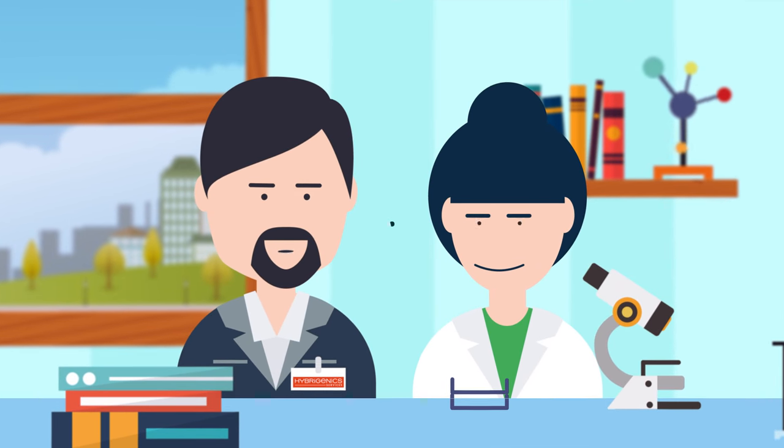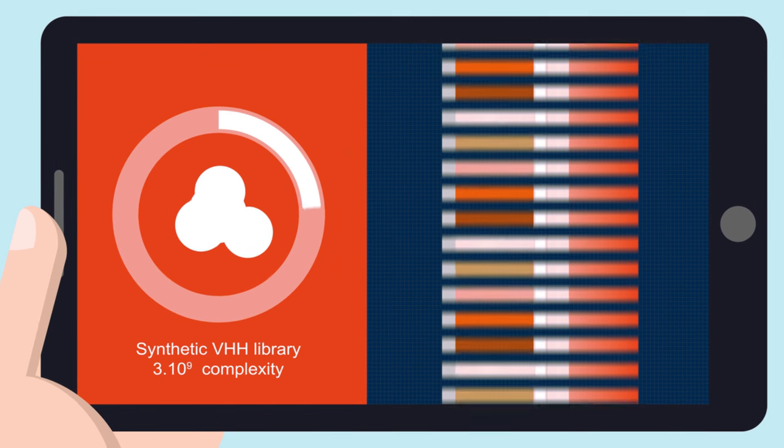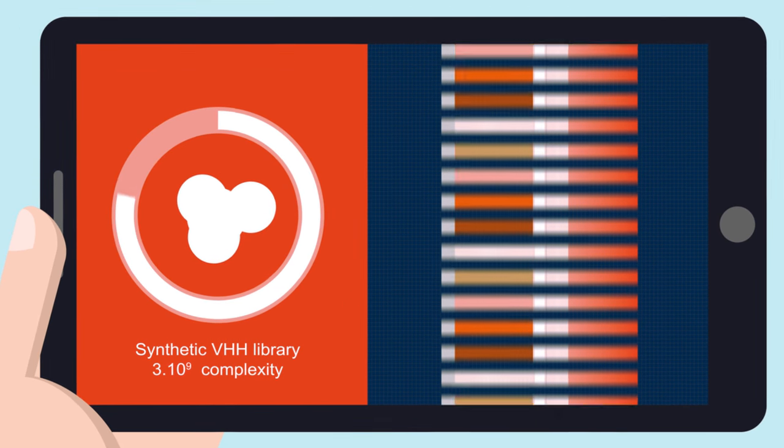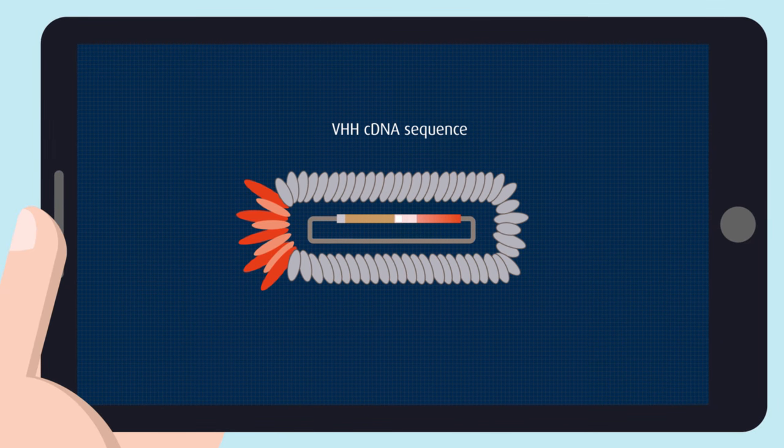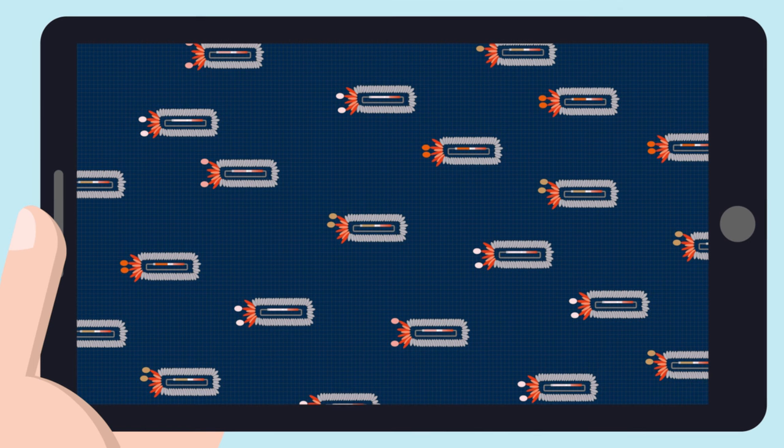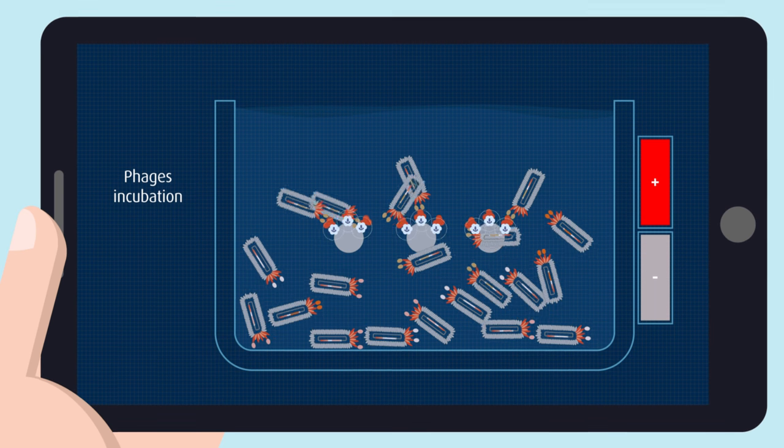Let me explain to you how it works. For phage display selection, the 3×10⁹ VHH of our library are expressed in fusion with the G3P envelope protein of the M13 phage. Phages are then incubated with your antigen of interest, put on beads in a homogeneous format.